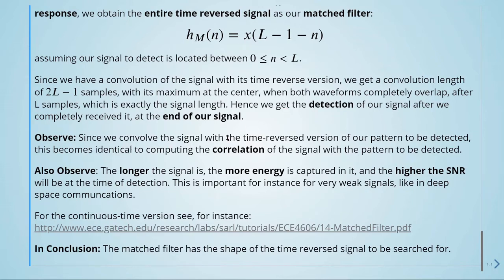Observe that since we convolve the signal with the time-reverse version of our pattern to be detected, this becomes identical to computing the correlation of the signal with the pattern to be detected. Also observe that the longer the signal is, the more energy is captured in it, and the higher the signal-to-noise ratio will be at the time of detection. And this is very important, for instance, for very weak signals, like in deep space communications. In conclusion, the matched filter has the shape of the time-reverse signal to be searched for.